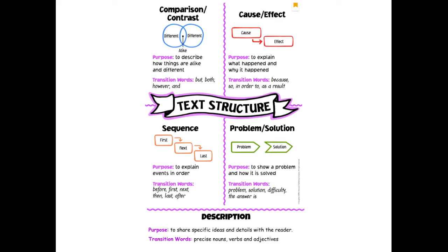The second text structure is cause and effect. This is a common structure in science texts when authors tell what happens and why. You may see transition words like because, so, in order to, or as a result.